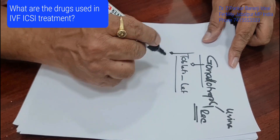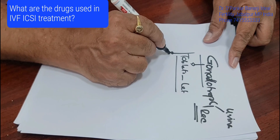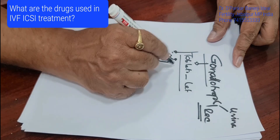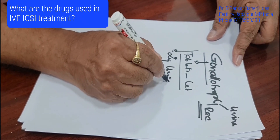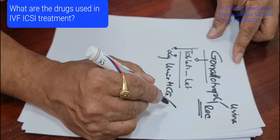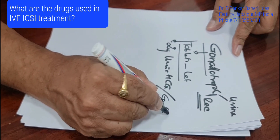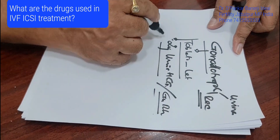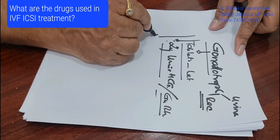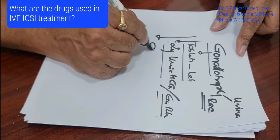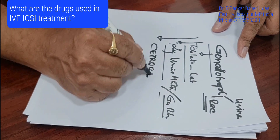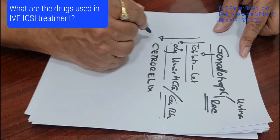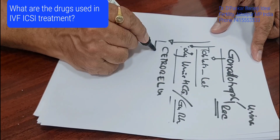For the final maturation or rupture of the follicle, we use either urinary HCG or a GnRH analog such as Buserelin or Lupride. Along with this, we use another drug called Cetrorelix, which helps in preventing the premature LH surge.